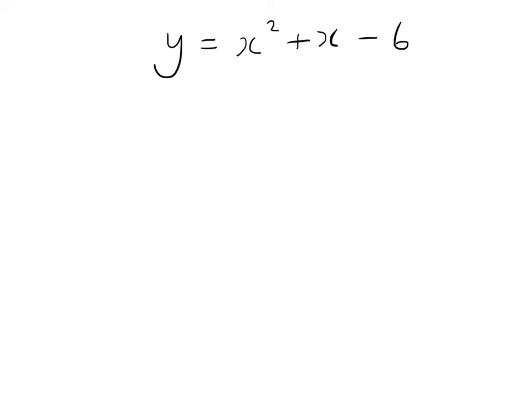They're either happy parabolas or sad parabolas. We can look at the coefficient of x squared — in this case it's a positive term, so it's a happy curve. If it were a negative number, we'd know it would be a symmetrical curve which curves the other way. We also know that the c term, where it cuts the y-axis, is negative — so it cuts the y-axis at negative 6.